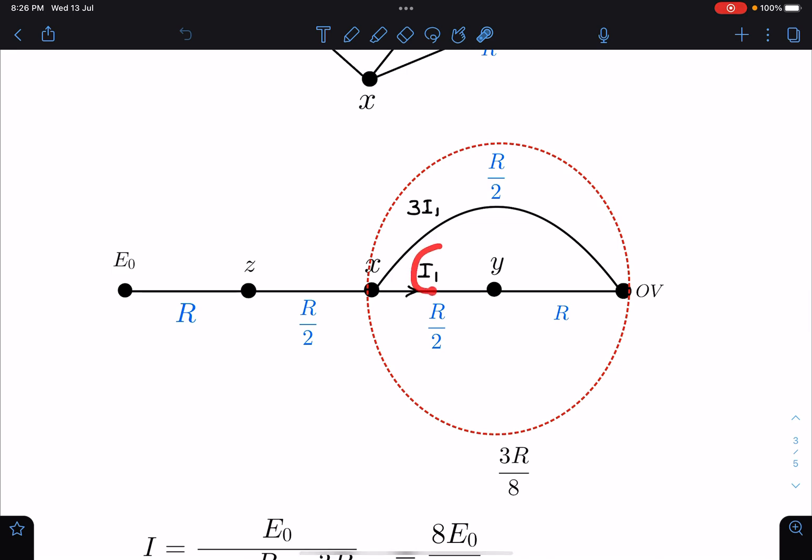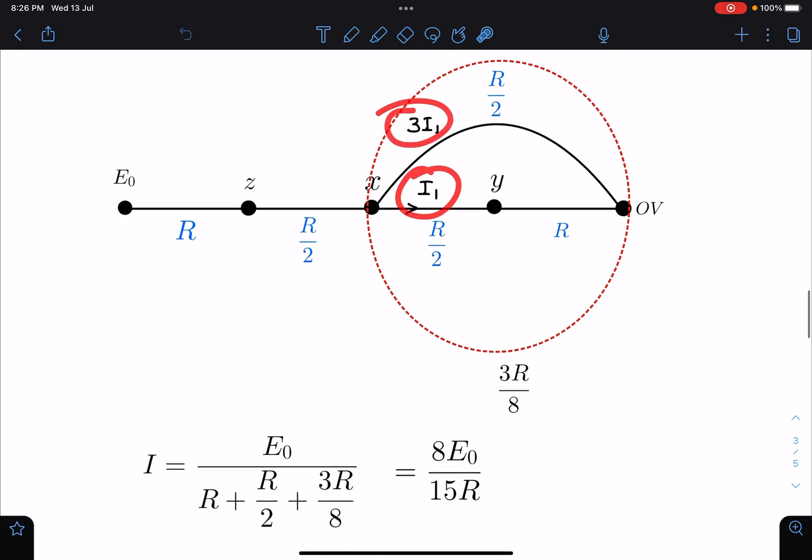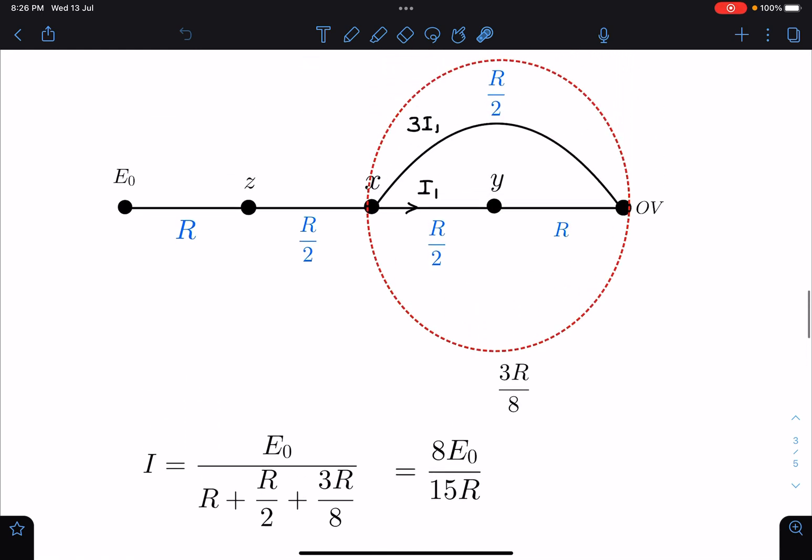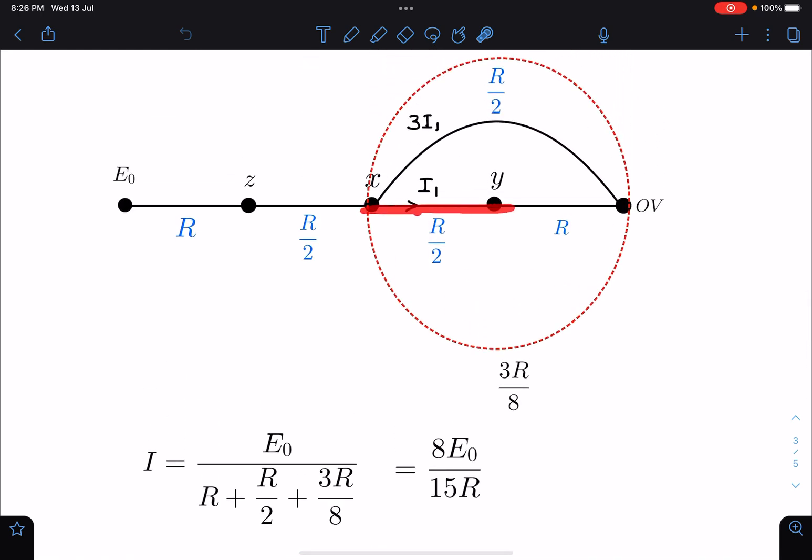Now you can see here, if this current is i1, this current is 3i1 here because this is R by 2 and this resistance is 3R by 2, so potential drop has to be same. So this current is 3i1 and this is i1, and sum of these two is 4i1 which is equivalent of I. And we know the value of this, 8E naught by 15R.